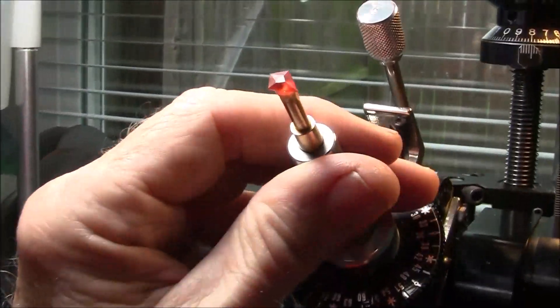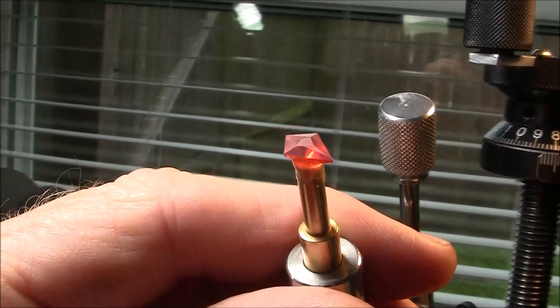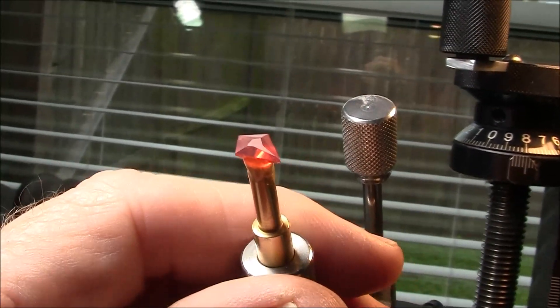I'm pre-polishing now with the zinc lap in 3,000 grit polish. That's how it looks so far.